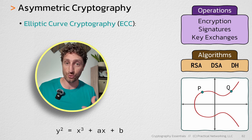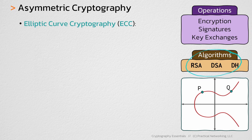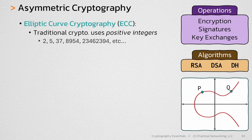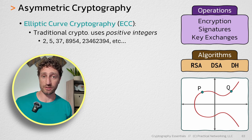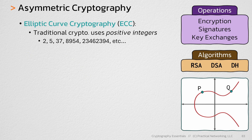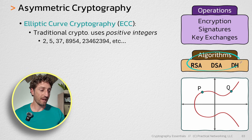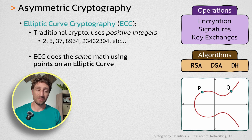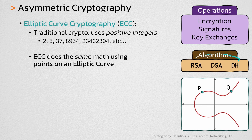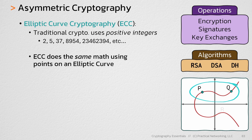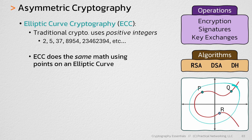Elliptic curve cryptography is going to do math on those values. So far in the course, we've been talking about RSA, DSA, and Diffie-Hellman. These algorithms are doing math on positive integers — any whole number greater than zero, numbers that you and I use every day. It turns out you can do the same math that these algorithms require using points on a curve. For instance, there's a way to combine the points p and q in a similar way to get a third value, in this case r. And all elliptic curve cryptography does is simply do the same math that RSA, DSA, and Diffie-Hellman require, using points on a curve instead of positive integers.